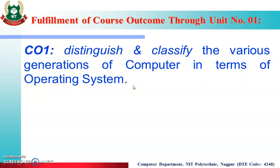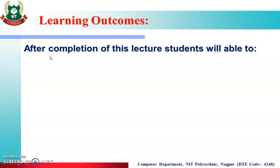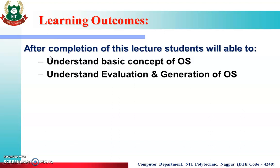After completion of Unit Number 1, we will achieve CO1. These are the learning outcomes. After completion of this lecture, we will be able to understand the basic concept of Operating System and understand the evaluation and generation of Operating System.